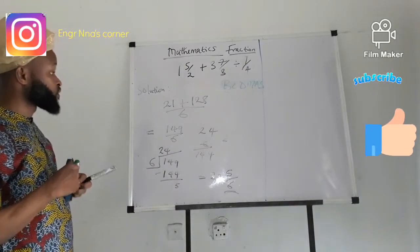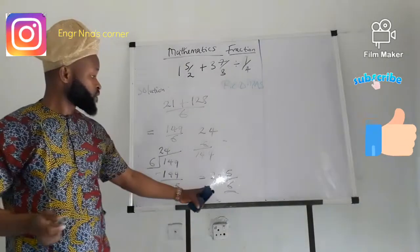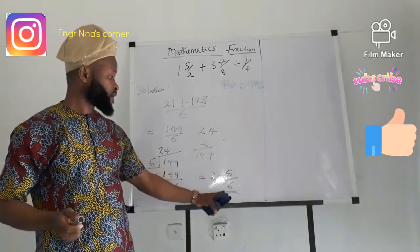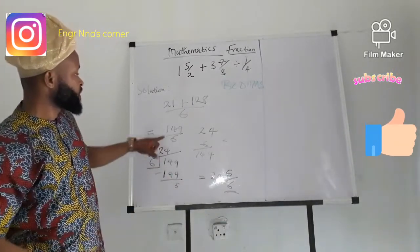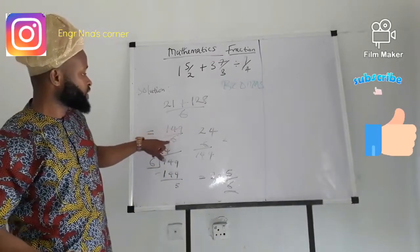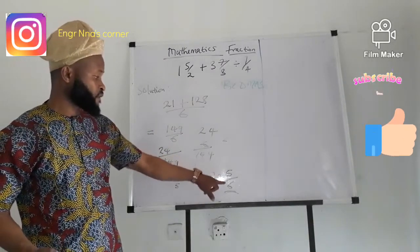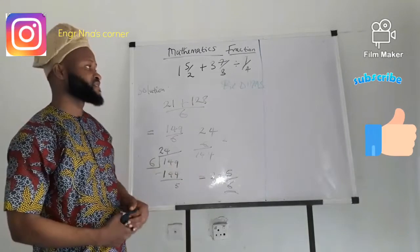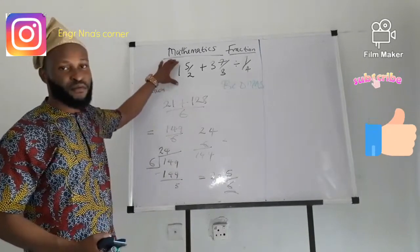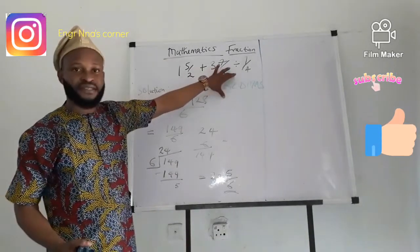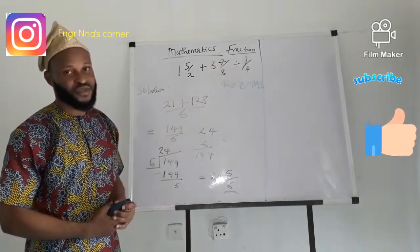I guess we got it. So our answer is 24 whole number 5 over 6. 149 divided by 6. The answer is 24 whole number 5 over 6. That is the solution to this very problem, following BODMAS. And that is how much we can do today.